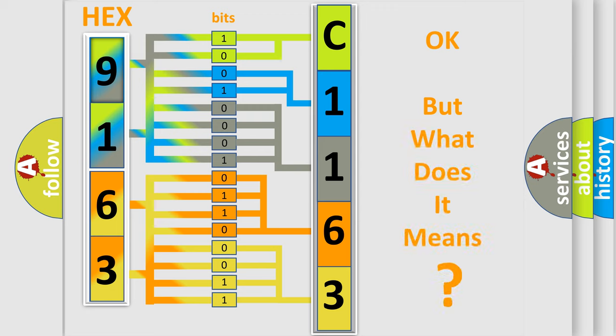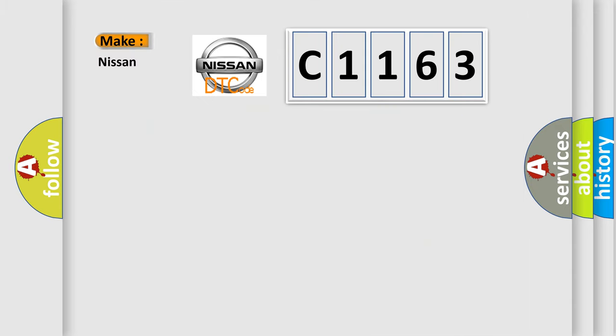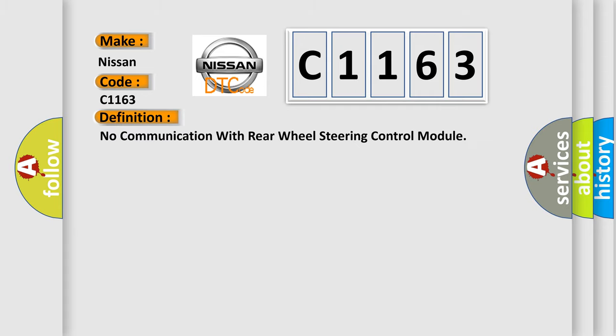The number itself does not make sense to us if we cannot assign information about what it actually expresses. So, what does the diagnostic trouble code C1163 interpret specifically for Nissan car manufacturers?